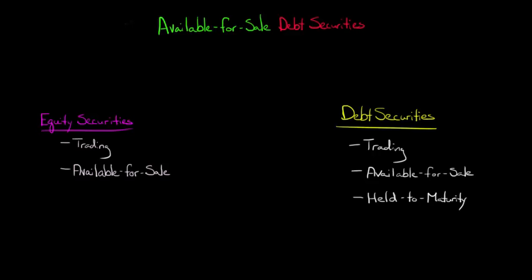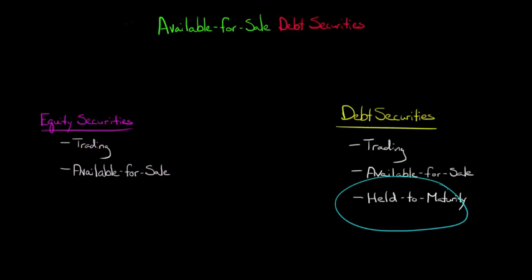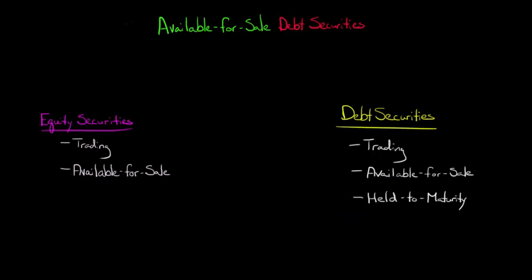In our last video, we talked about how to account for held-to-maturity securities. But debt securities can also be categorized as available for sale, and that's going to involve different accounting. Whereas with held-to-maturity, we value the bonds or whatever kind of debt we have at amortized cost on our balance sheet, with available for sale, we're going to value the debt at fair value. Any unrealized gains or losses are going to end up going to other comprehensive income.